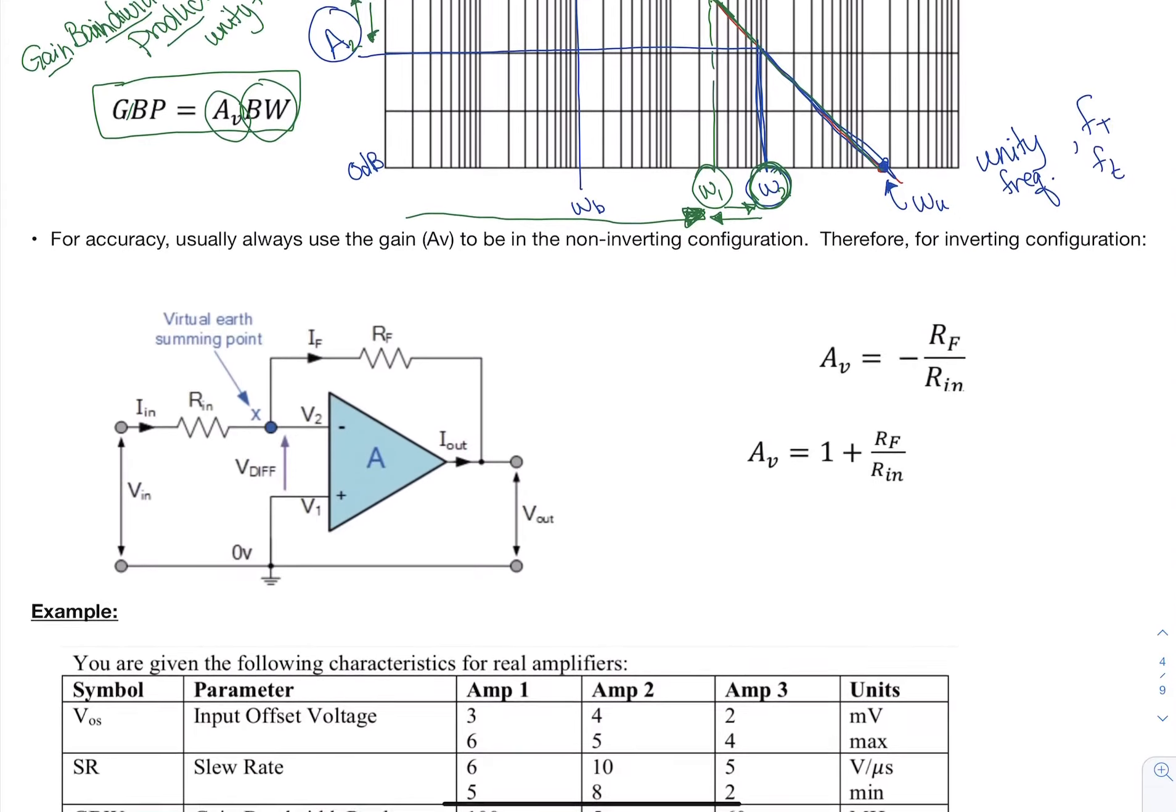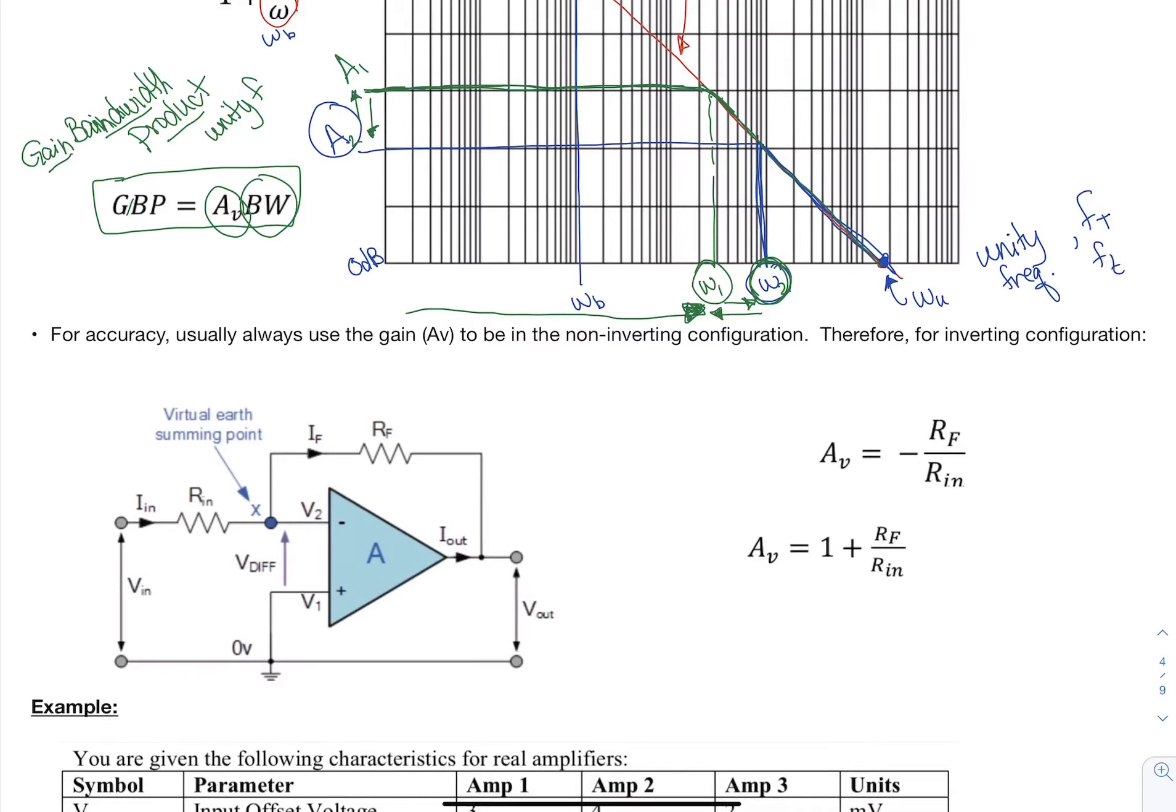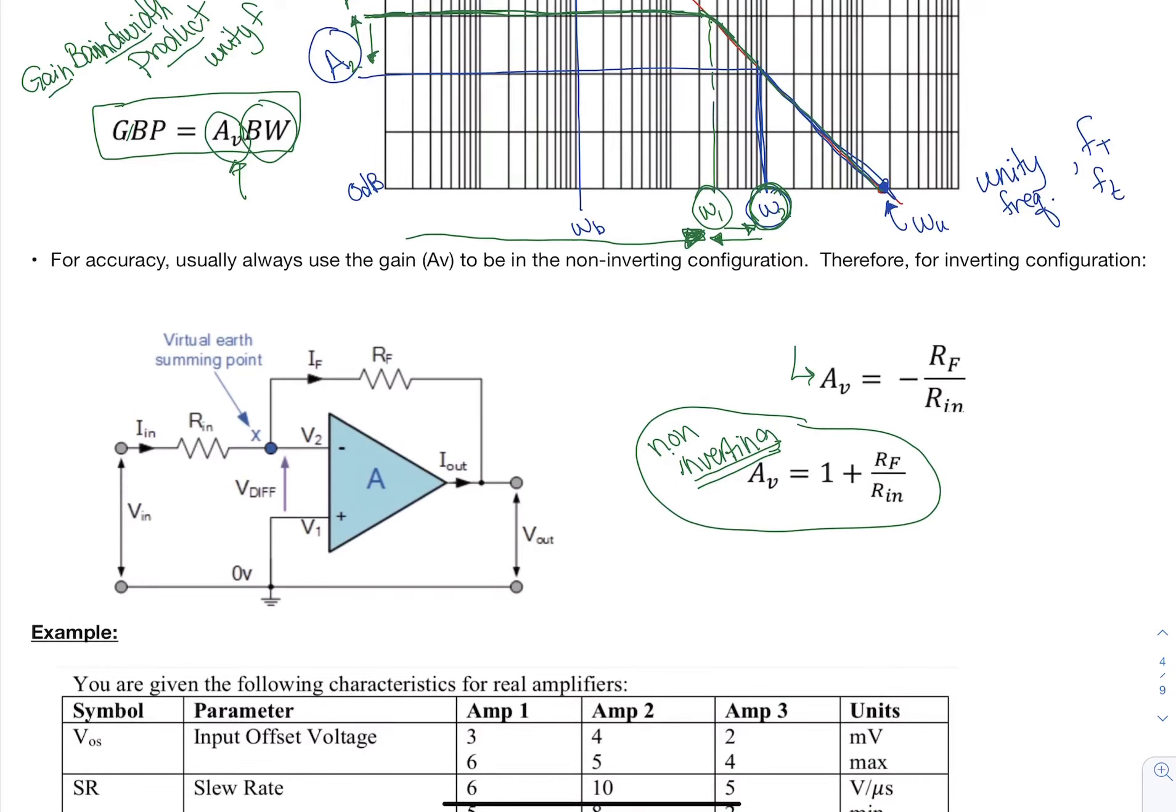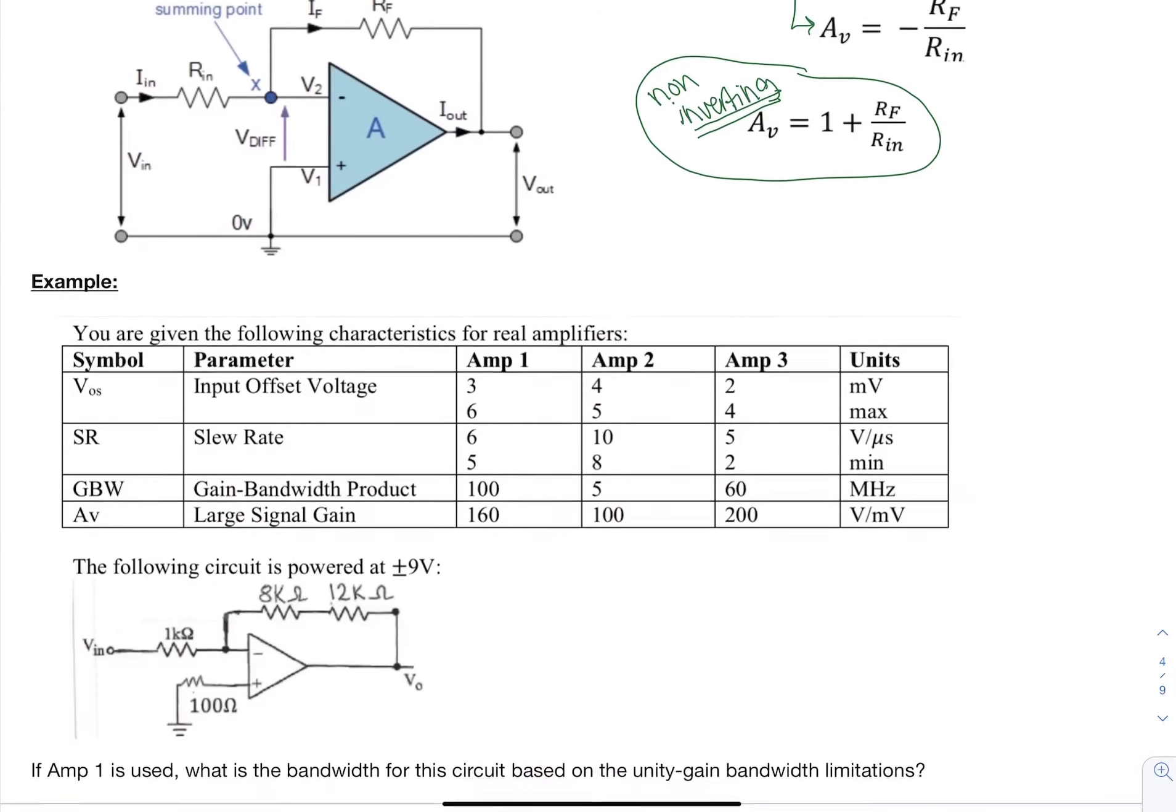And so for accuracy, no matter what configuration you're going to put it in, it's always going to be in the non-inverting configuration. So for example, this is an inverting amplifier, which has a gain of the RF over RN, what we're going to use for the gain here is going to actually be 1 plus the RF over RN.